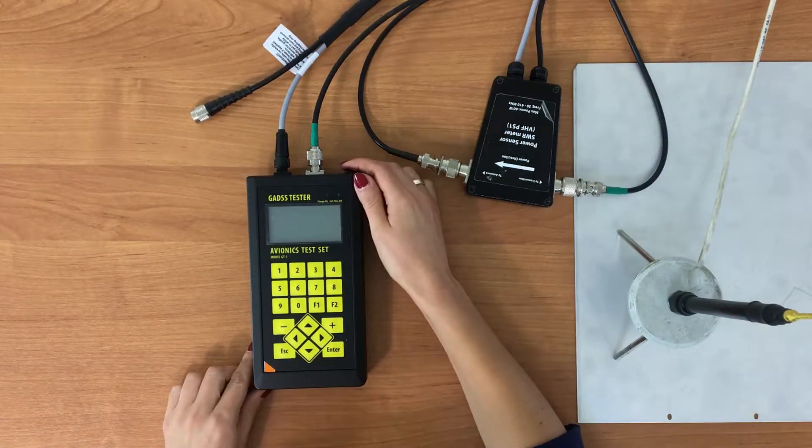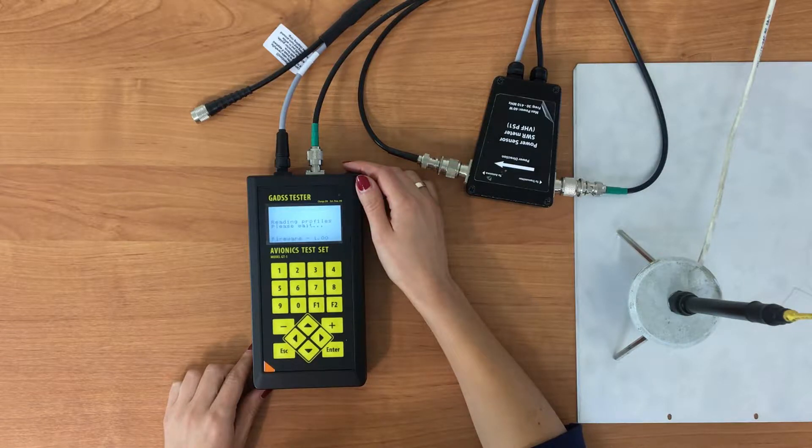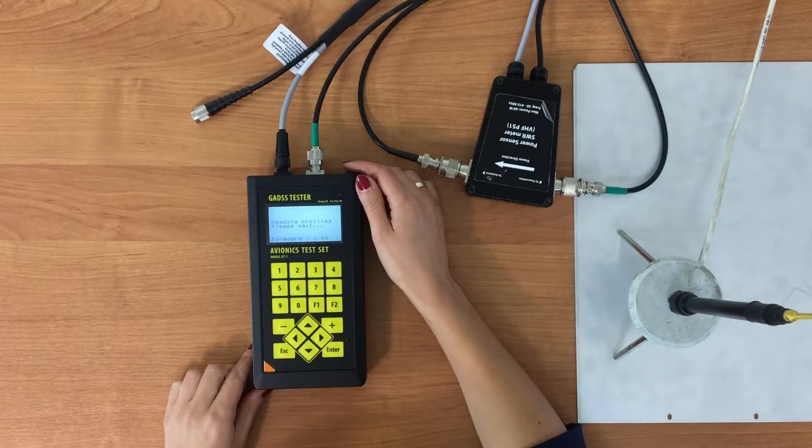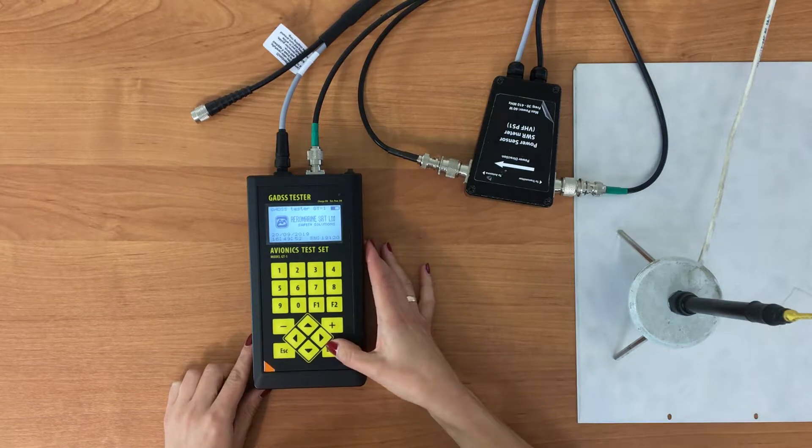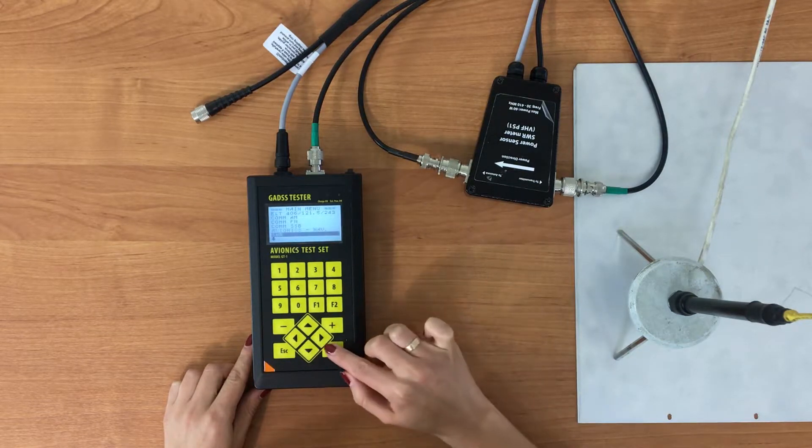Now turn on the device and go to the main menu by pressing ENTER. Select SWR and press ENTER.